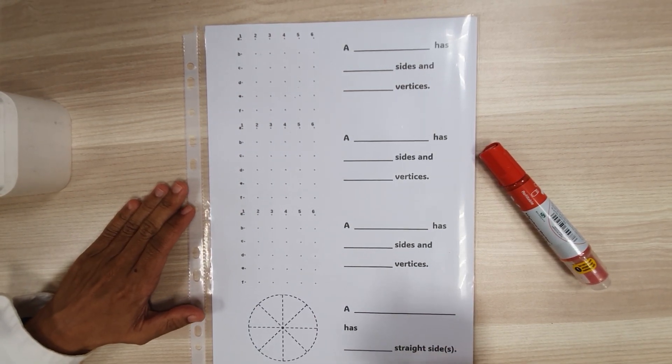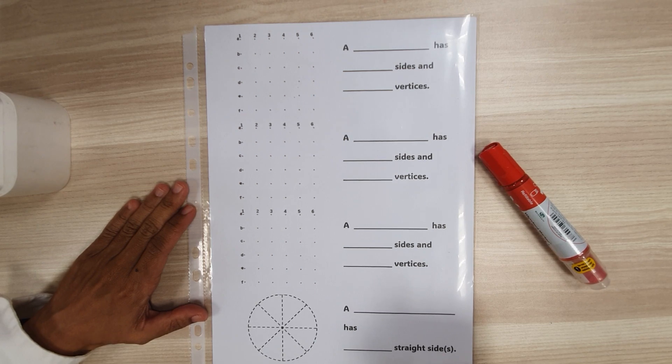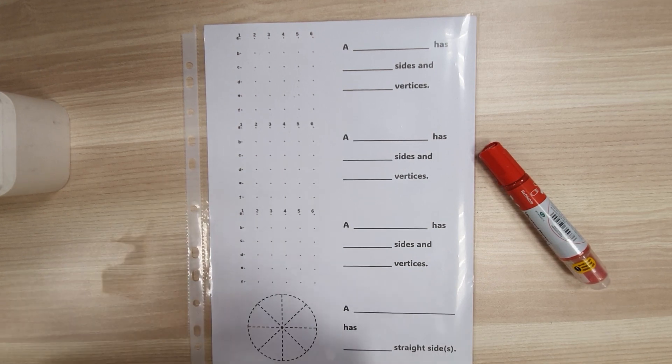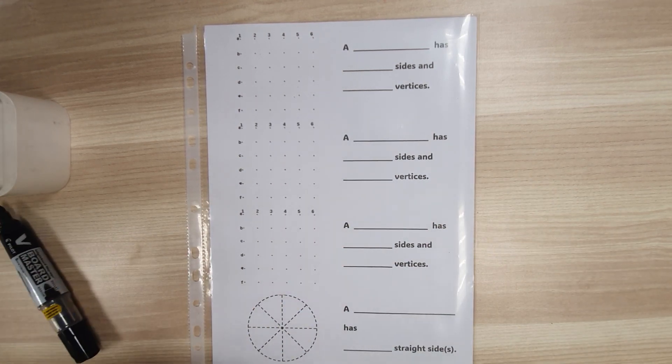Decide on the shape that you want to draw. I have decided to draw a square. I'm going to start at this point. Let me mark it in red.